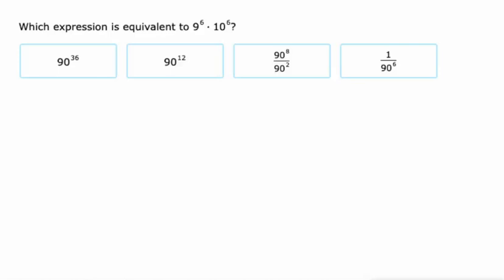Then we get into some interesting problems. Based on that rule we talked about earlier, when we have the same exponent and we're multiplying, we multiply the bases and keep that exponent. But 90 to the 6th power is not here.